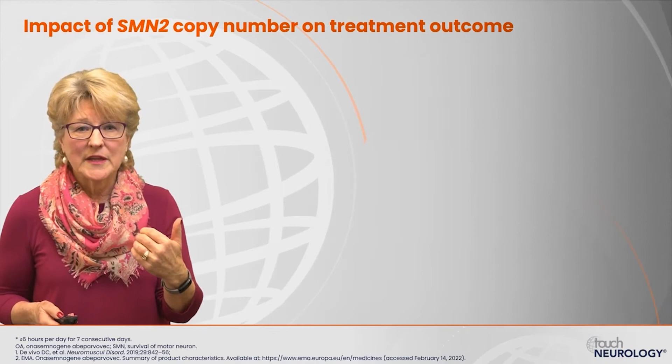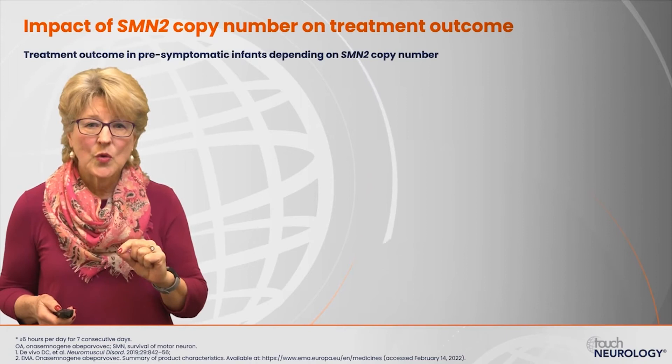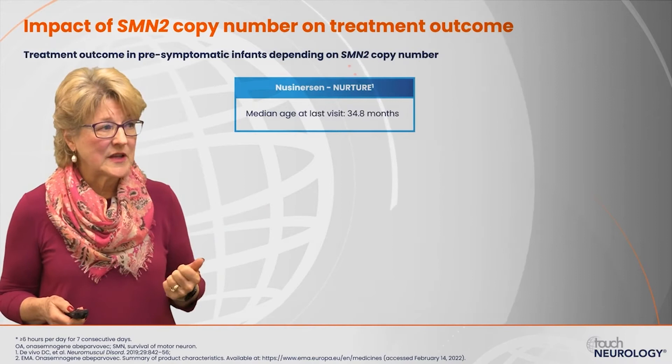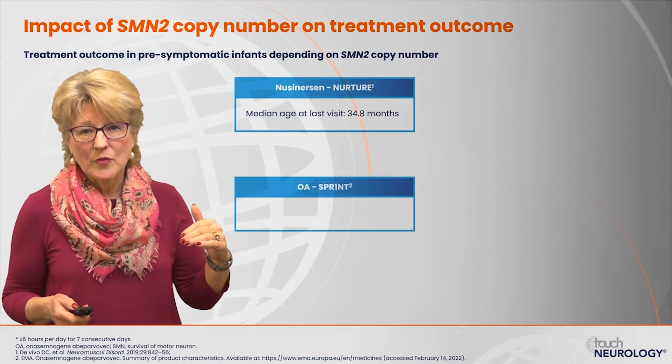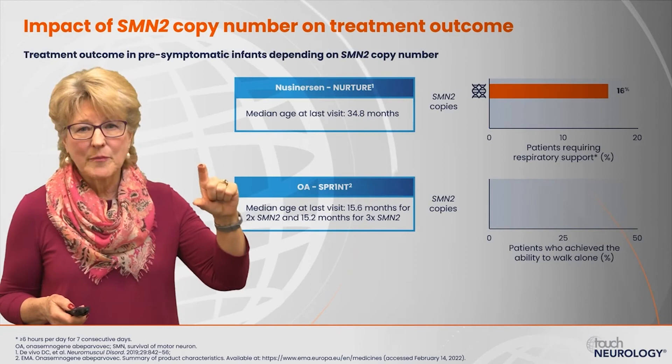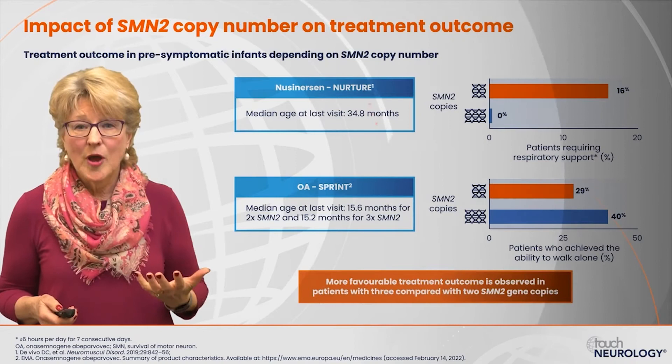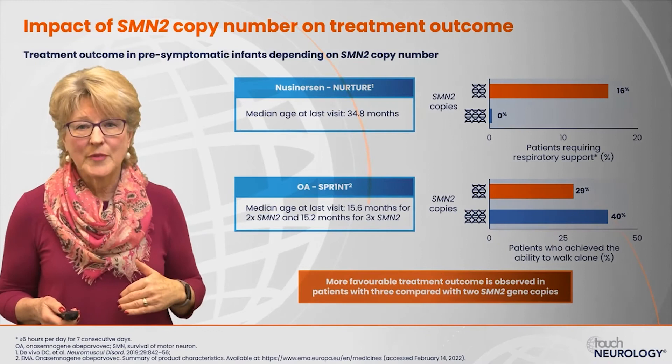In two trials conducted in pre-symptomatic babies — the NURTURE trial with nusinersen lasting about 35 months, and the SPR1NT trial with onasemnogene abeparvovec — two-copy SMN2 patients did not do as well as three-copy patients. There are more favorable treatment outcomes in patients with higher copy numbers: three copies of SMN2 versus two-copy patients.